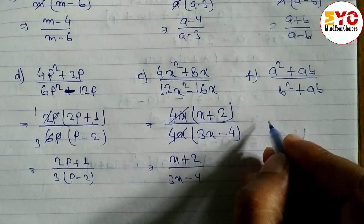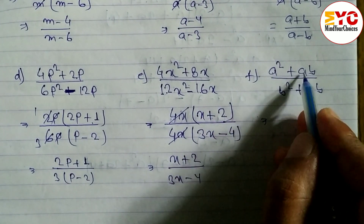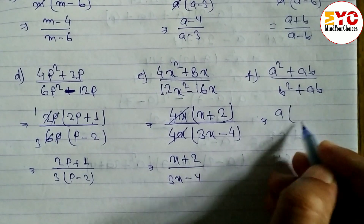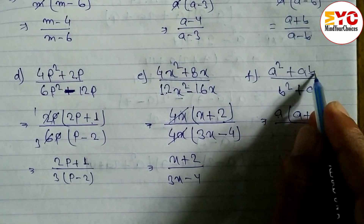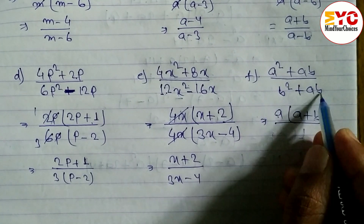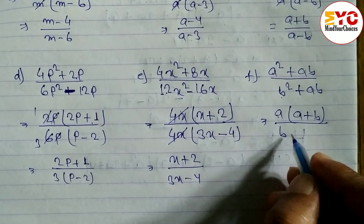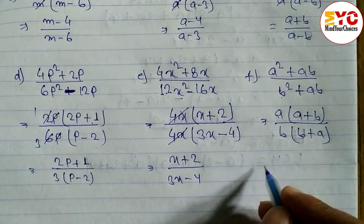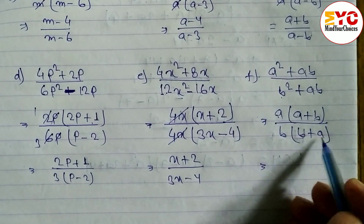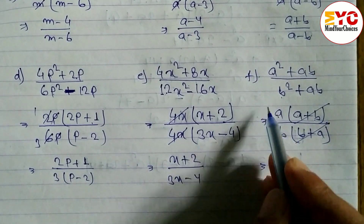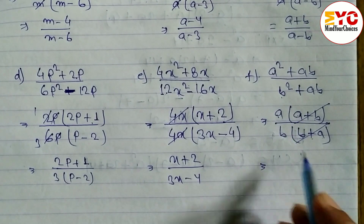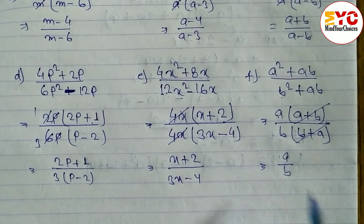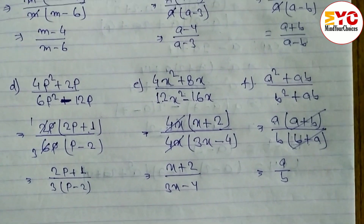Question f: a squared plus ab — take a common, leaving a(a plus b), because a times a is a squared and a times b is ab. For b squared plus ab — take b common, leaving b(b plus a). Now, a plus b and b plus a are the same thing — just as two plus four and four plus two both equal six. So a plus b and b plus a cancel, and what remains is a over b.